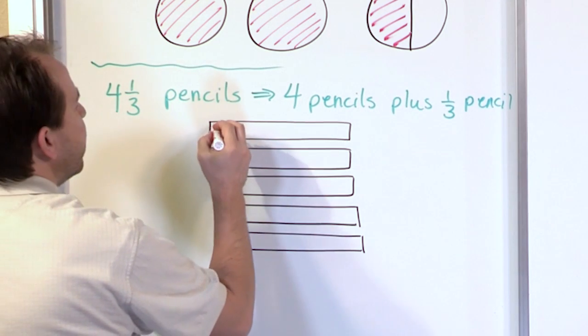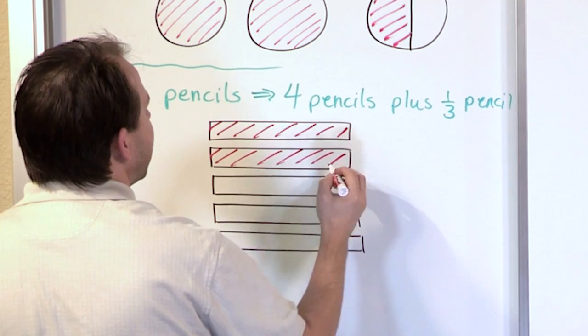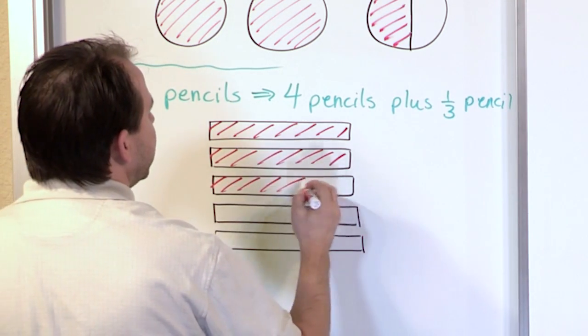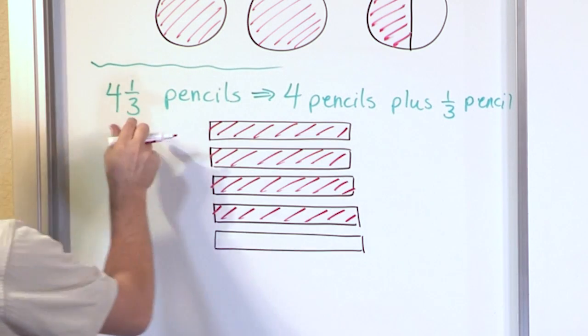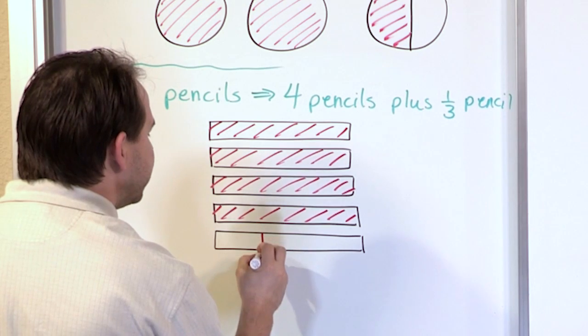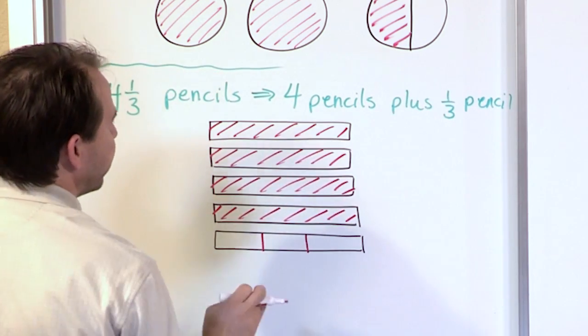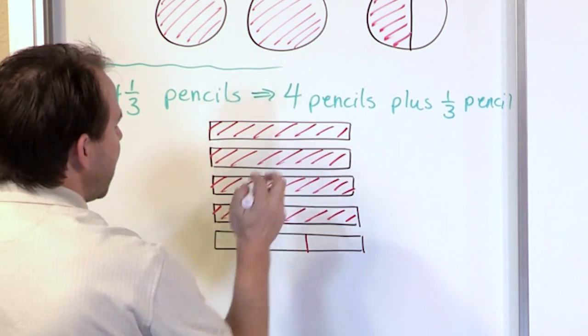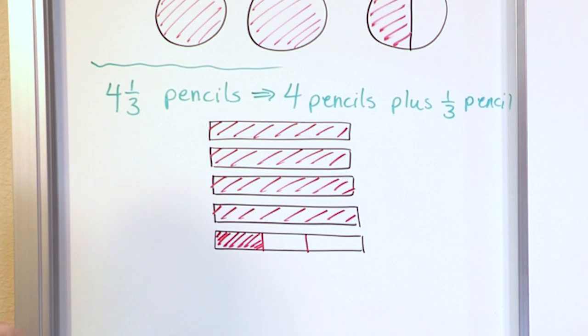Four and a third. So here is pencil number one, so I take that one away. Here's pencil number two, I take that one away. Here's pencil number three, take that one away. Here's pencil number four, I take that one away. So this comes from the fact that there's four pencils in front. But if I have one third of a pencil, I have to divide the last pencil into three pieces because the bottom number is three. And then the top number means I only have one third of that last pencil. So if these were pencils here, this would represent four and one third pencils.